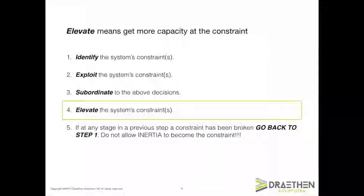Step four of the five focusing steps is to elevate the system's constraint. For our little plant, which is trying to increase flow at the CCR, this simply means getting more capacity. There are two main ways to do this. First, you can increase the capacity available within the period for which the CCR is available. Let's assume our little plant works just one eight-hour shift per day — a way of elevating the constraint is to invest in another machine. That is why we pursue steps to exploit and subordinate first. In practice, many companies simply buy more capacity, but the improvement possible by first exploiting and then subordinating is often huge — I would assume at least a 30% increase in output in most cases.